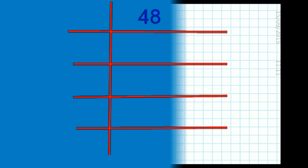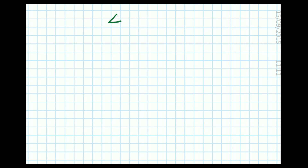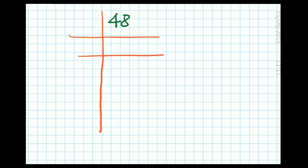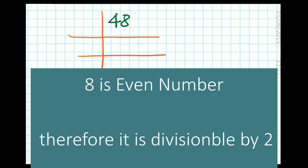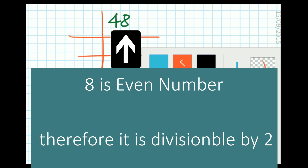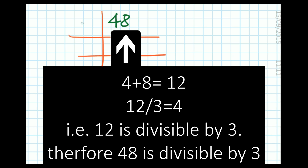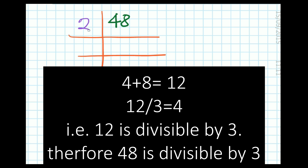I am writing the number 48 and drawing the lines as applicable for finding the prime factor. We will take the help of the divisibility rule. 48 is divisible by 2 and 3, so we can start with 2 or 3. Since 4 plus 8 equals 12, we will get 24 here.